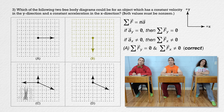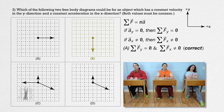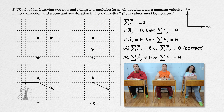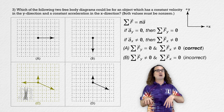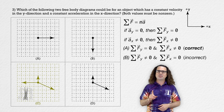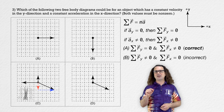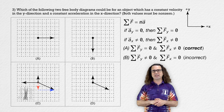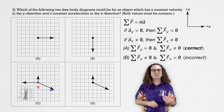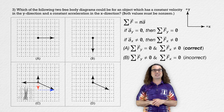Choice B has only one force in the positive y direction, giving a non-zero net force in y and zero net force in x — so choice B is incorrect. For choice C, the grid is there to help determine the magnitudes of vectors and their components. The vector acting down and to the right has a vertical component two grid spaces down in red and a horizontal component four grid spaces to the right in blue. The force to the left is also four grid spaces in length — balancing the x direction.